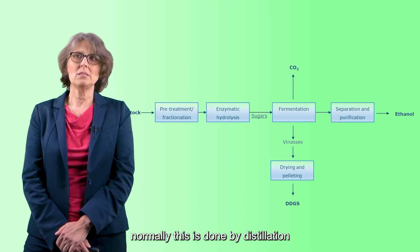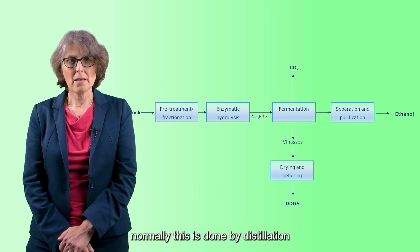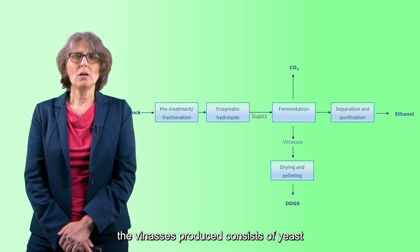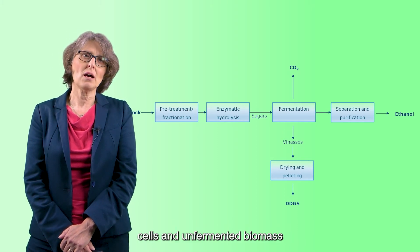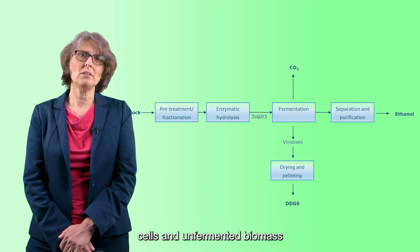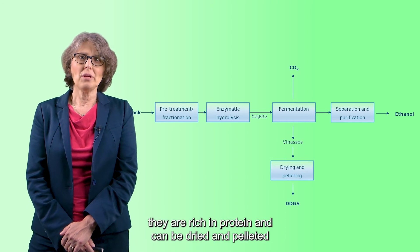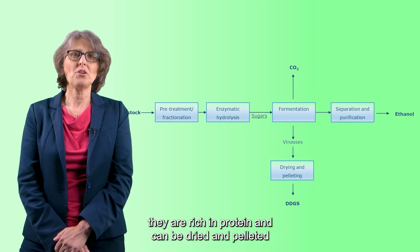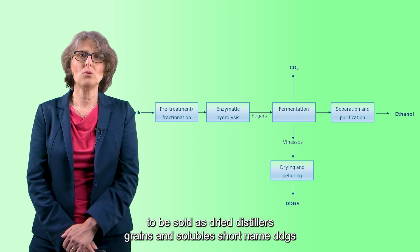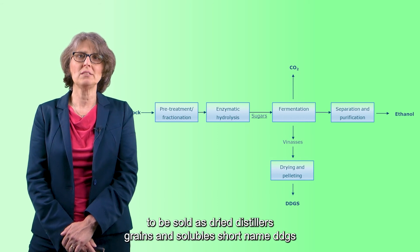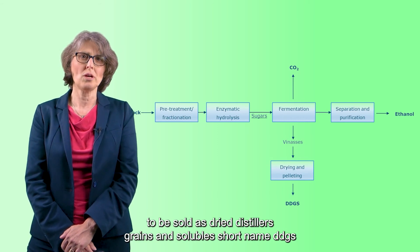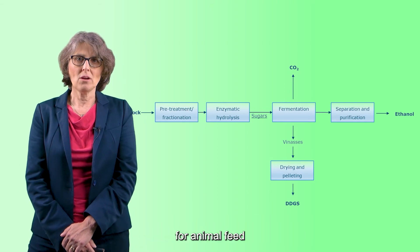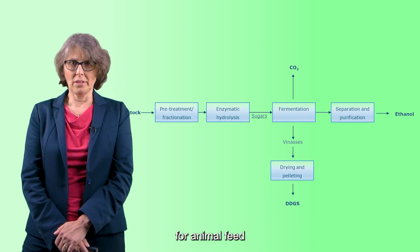Normally, purification is done by distillation. The vinasses produced consist of yeast cells and fermented biomass. They are rich in protein and can be dried and pelleted to be sold as dried distillers' grains and solubles, short name DDGS, for animal feed.